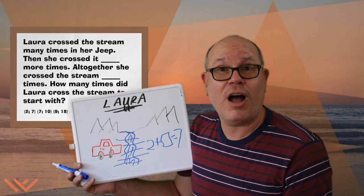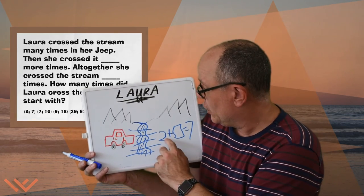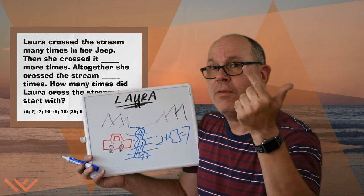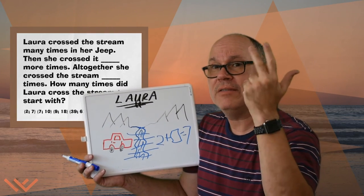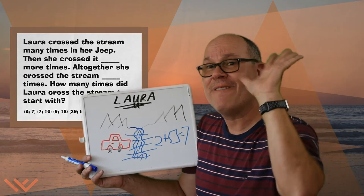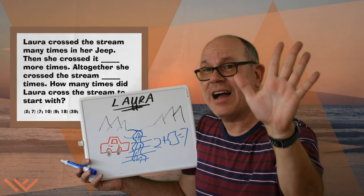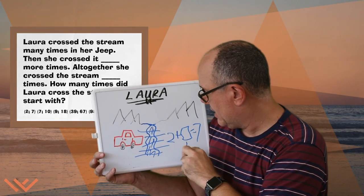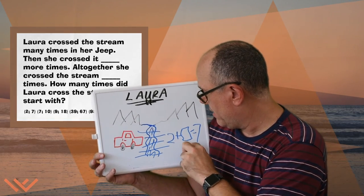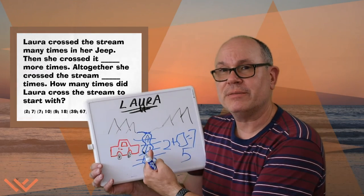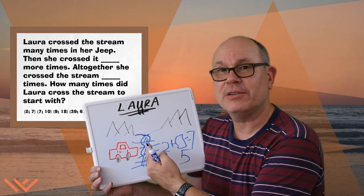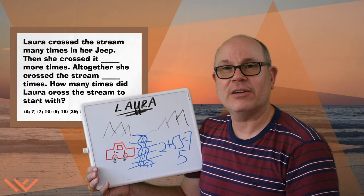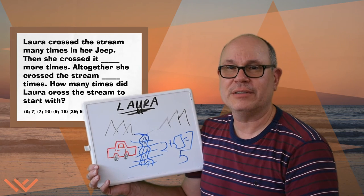Or we can count on: two, three, four, five, six, seven — five times. There you go. So that's how we can get five. Not only did we draw the picture, we have a deeper understanding, and then we figured out the answer using the standard algorithm to validate our answer.